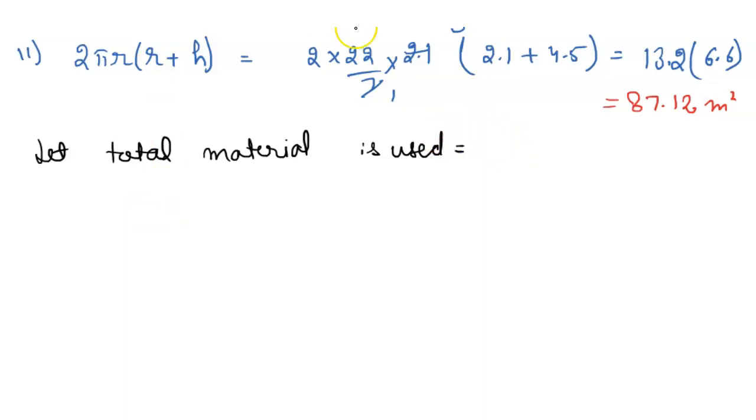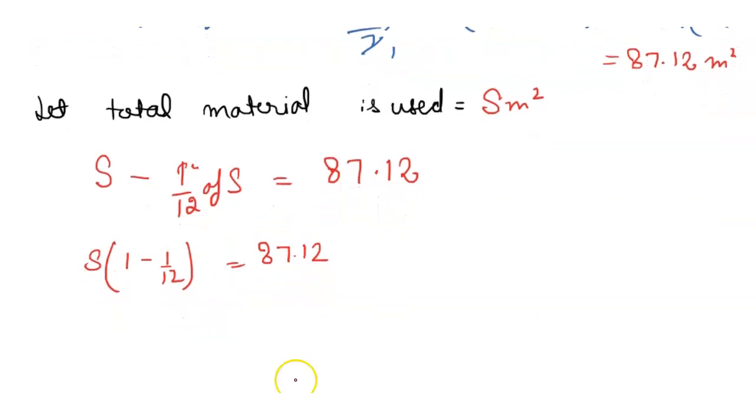S meters squared, and 1/12 is wasted. So S minus 1/12 of S is wasted, equals 87.12. So S is common. Here is 1 minus 1 upon 12 equals 87.12.